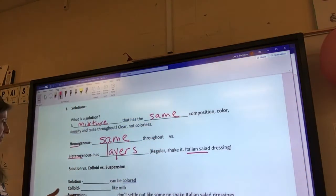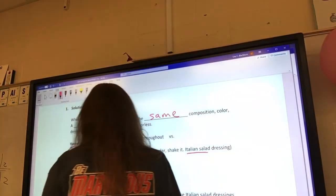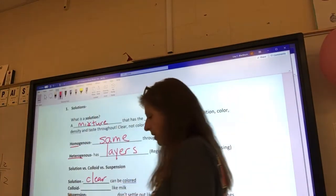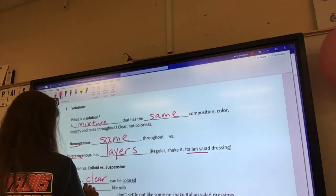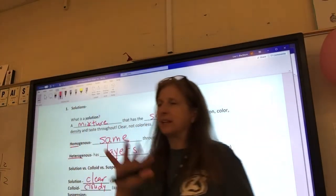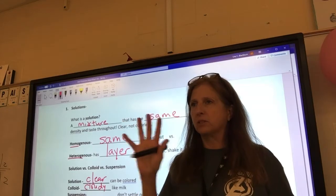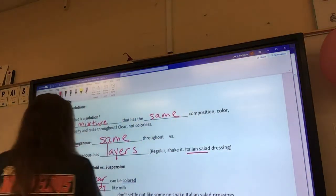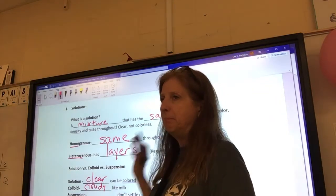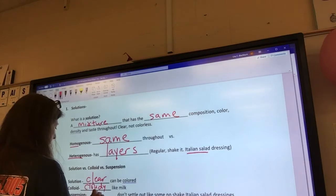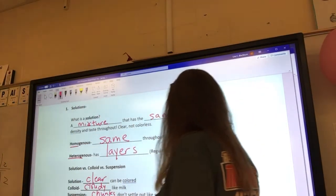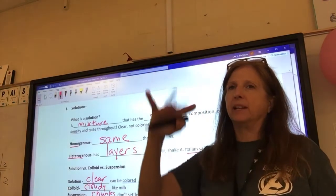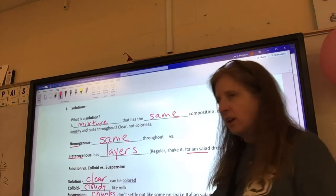Here are some more vocabulary words. It's solution versus colloid versus suspension. So a solution is clear. It can be colored, but it's clear. A colloid is cloudy like milk. It has droplets or something suspended in it. With milk, it's little fat globules that's suspended in it, but it's cloudy for some reason. And the suspension, it has stuff suspended in it like a colloid, but it's big, and it's chunks. You have chunks suspended in it.